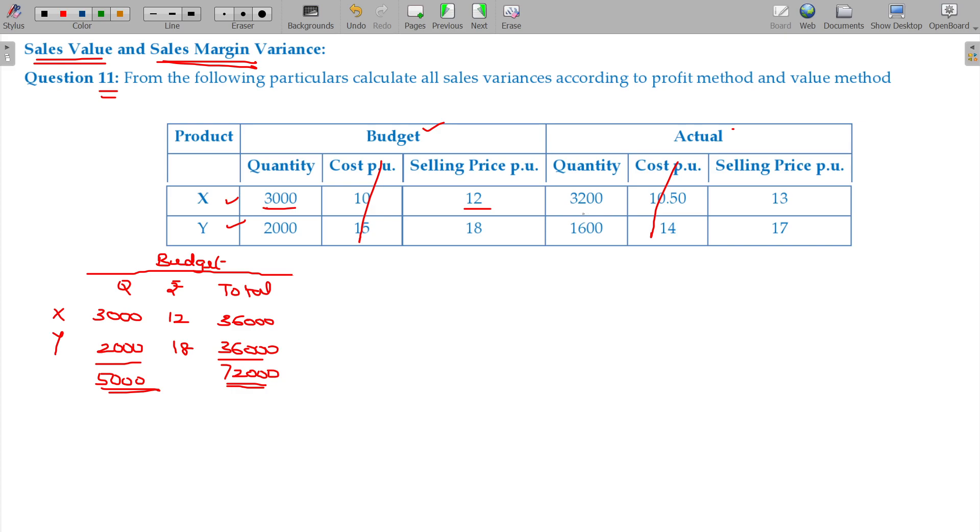Now for the actual data: 3200 units were sold, and 1600 units. The actual prices are 13 and 14. Wait, 13 and 17. The total actual collection is 41,600 plus the amount from Y.